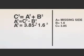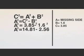3.85 squared is equal to 14.81 and 1.6 squared is equal to 2.56. Therefore, A squared is equal to 12.25.